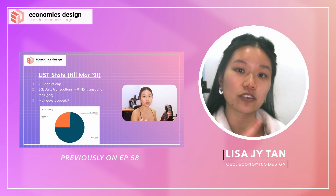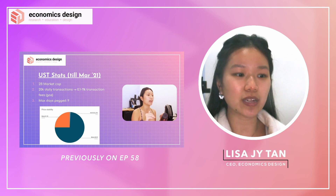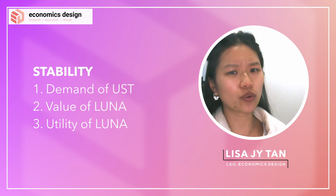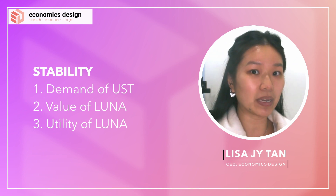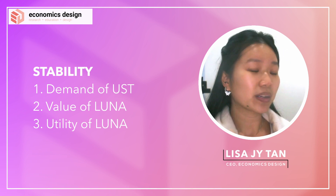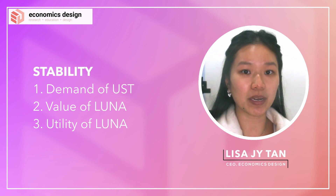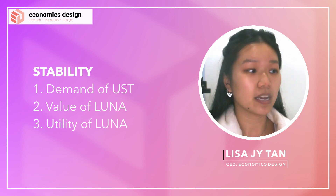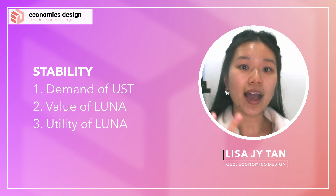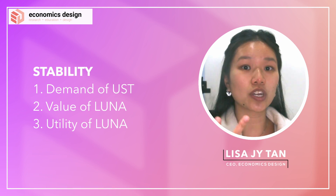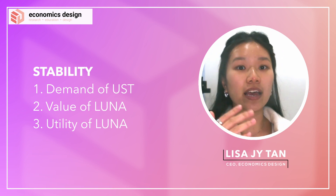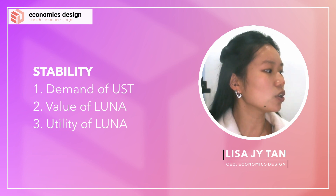I've recreated the stats and I'll show you what the new stability index is — how stable UST actually is. Just a quick recap: when we're talking about the stability of UST, the algo stablecoin, there are three factors that affect its stability. The first is the demand of UST, the second is the value of Luna, and the third is the utility of Luna. We have talked about all three factors in the previous episode, so go check them out.